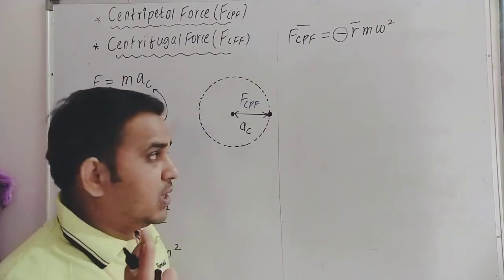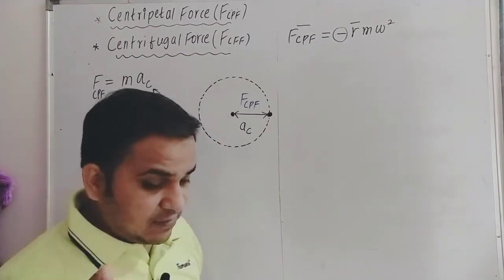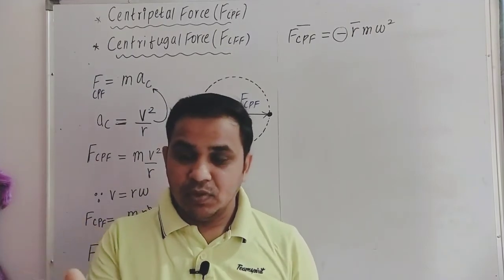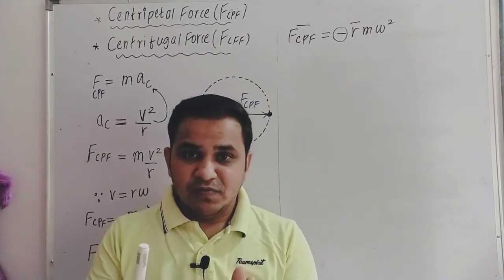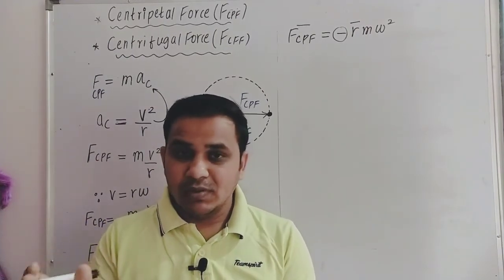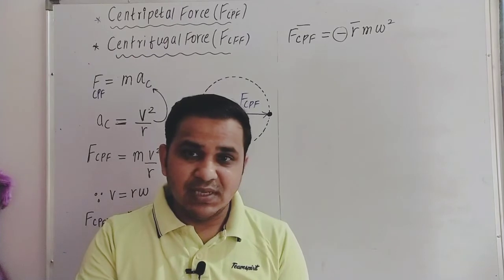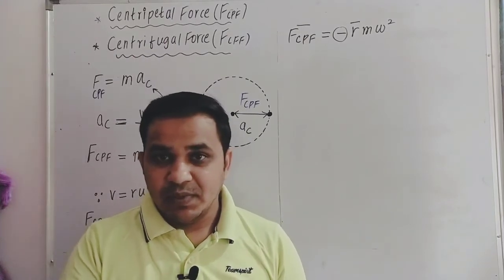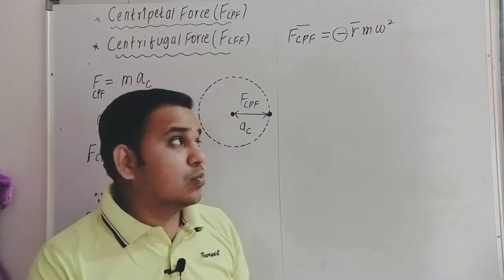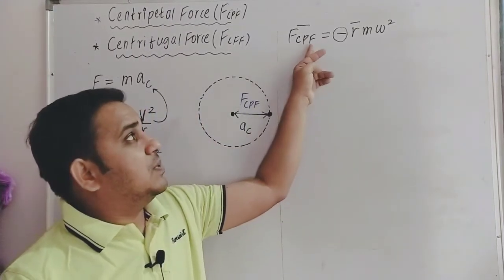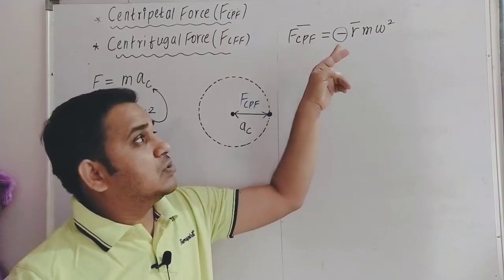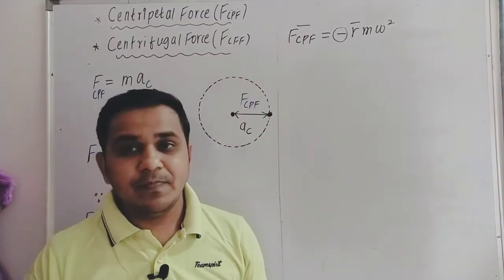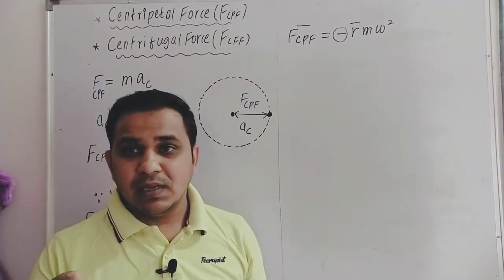So now you have two points for your exam differentiation. First, for centripetal force: it is a force which is along the radius and directed towards the center. Second, its formula: Fcpf = −r̄·m·ω².